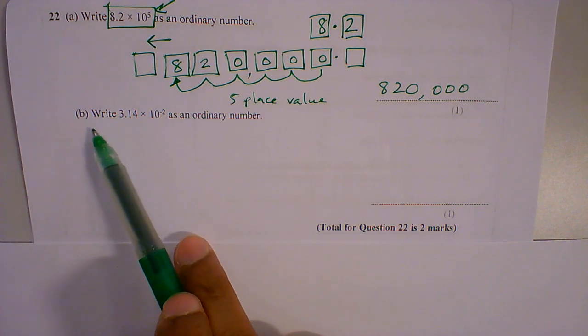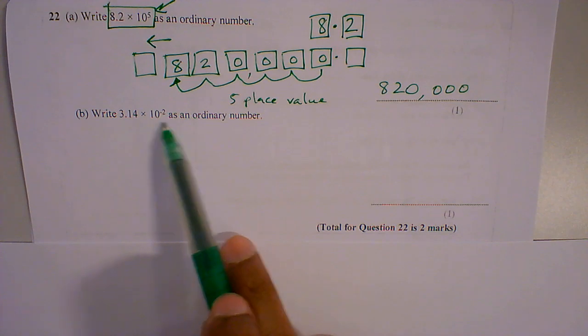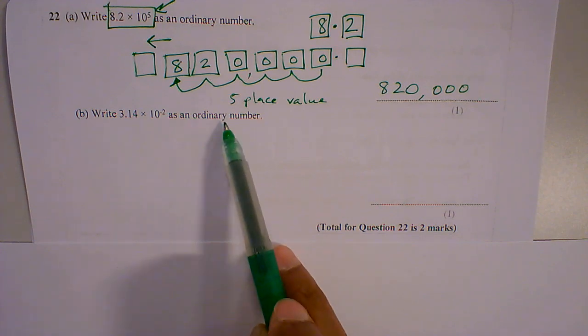Question 22b, write 3.14 times 10 to the power minus 2 as an ordinary number.